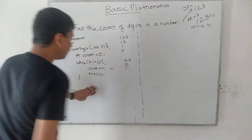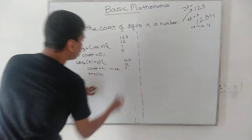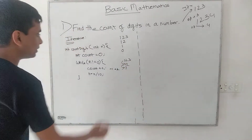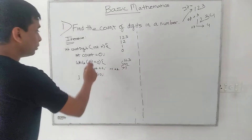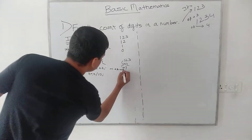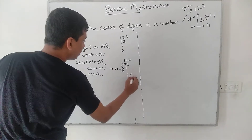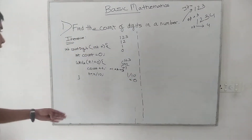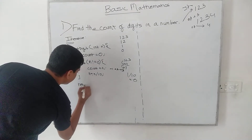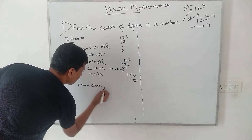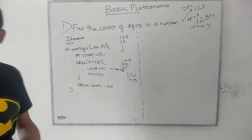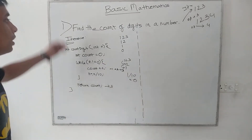On the second iteration, n becomes 1, so count is increased by 1 again, making count 2. Now n is 1, which is not equal to 0, so we enter the loop again, increase count by 1 — that is 3 — and now n becomes 1 divided by 10, which equals 0. Since the condition is no longer satisfied, we exit the loop and return count, which now has a value of 3. This is the iterative approach to find the number of digits in a particular number.